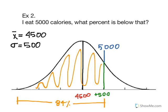Example 2. I eat 5,000 calories. What percent is below that? The mean value is 4,500, and the standard deviation is 500. We know the whole curve contains 99.7 percent of the data.